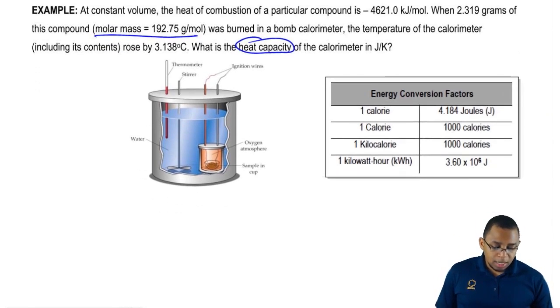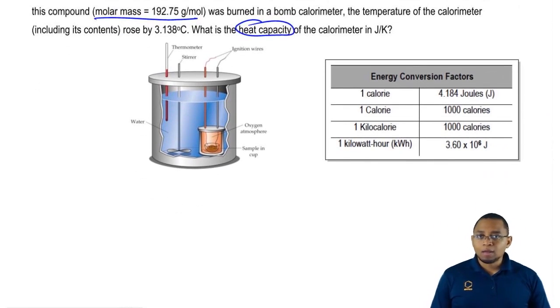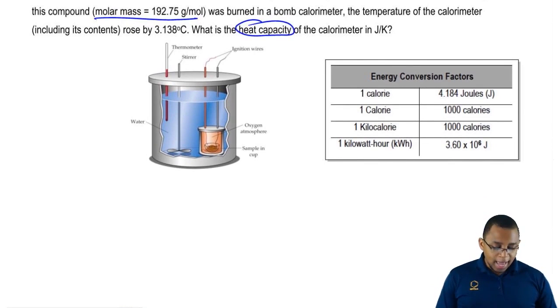First of all, this image that we have here is called a bomb calorimeter. It's a way of us actually figuring out how much energy does an object contain in it. The way it works is we have our sample put inside of this small little bowl here and that is placed inside of this water. This whole unit is referred to as a bomb.